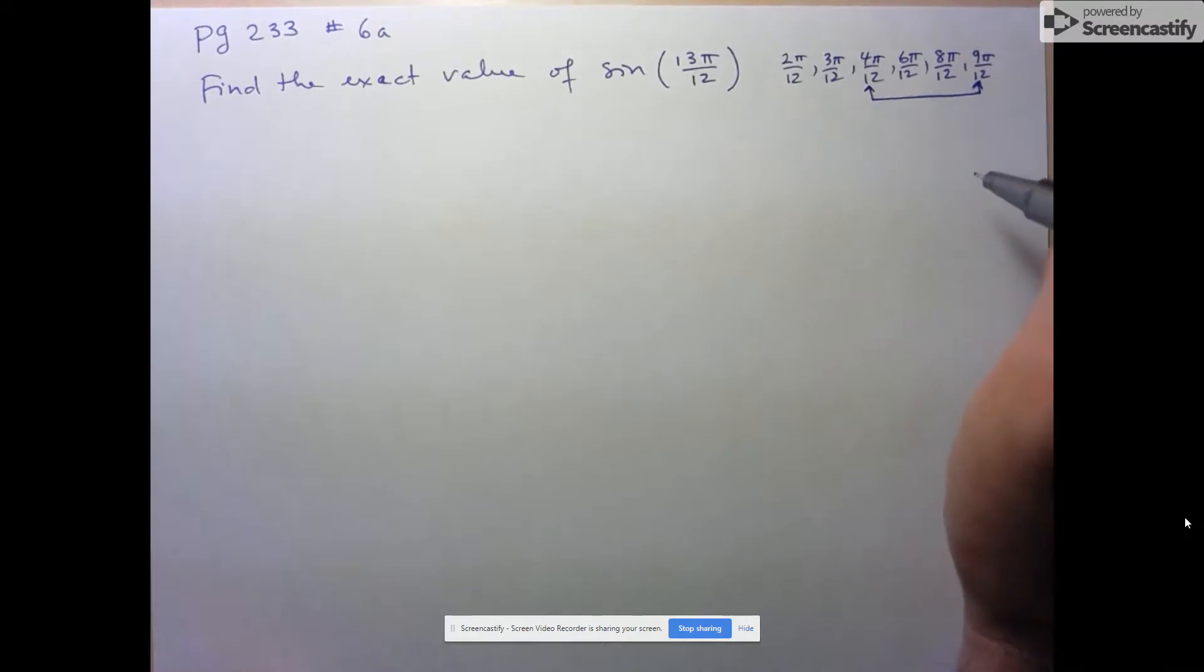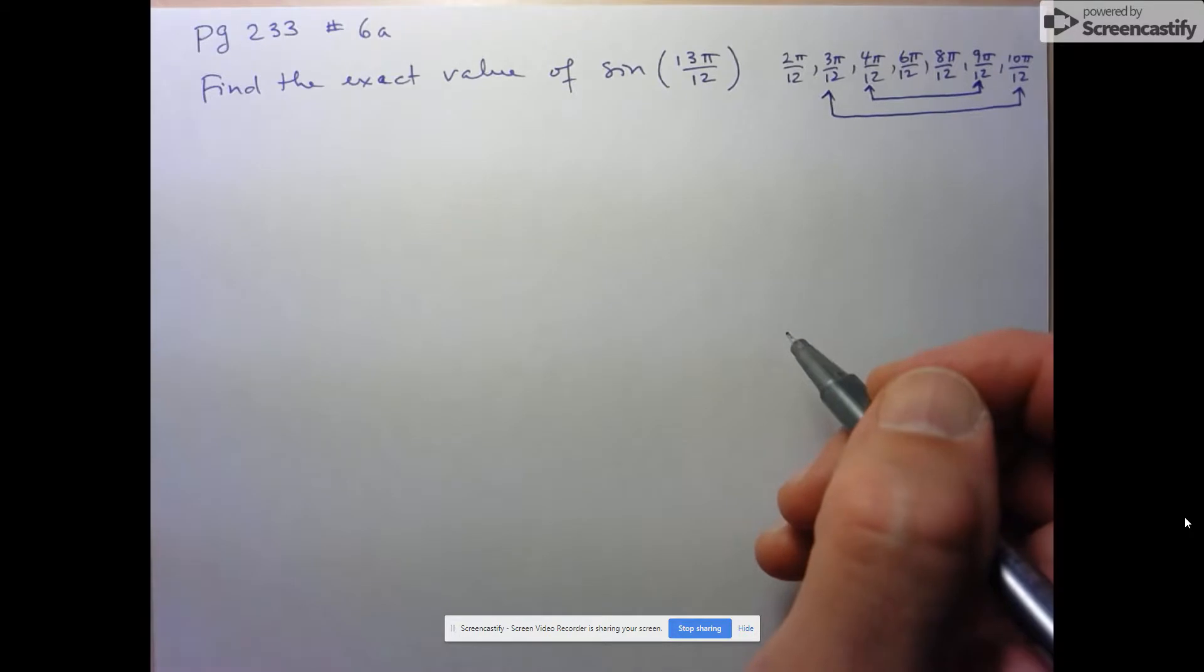If I go to the next one, 10π over 12, which is the same as 5π over 6, I say hey, this combination could also work: 5π over 6 and π over 4. Either of these will do the trick. So I might as well use the first one that I found there.